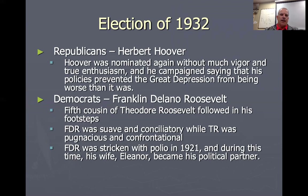The election of 1932 comes along, and it's really anyone but Hoover. Herbert Hoover is going to run for the Republican Party. He was nominated without much vigor or enthusiasm. He is, at times, unfairly blamed for the Great Depression. The Great Depression was coming no matter what — a lot of people blamed the combination of Harding, Coolidge, and Hoover with their economic policies, but the Great Depression was worldwide.